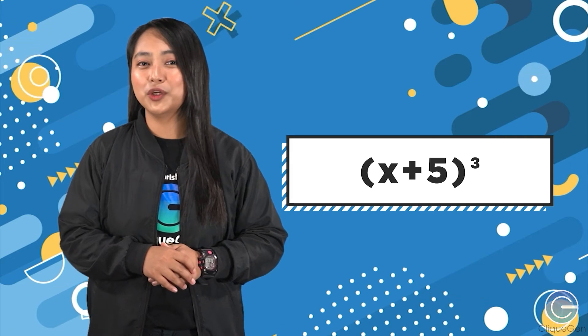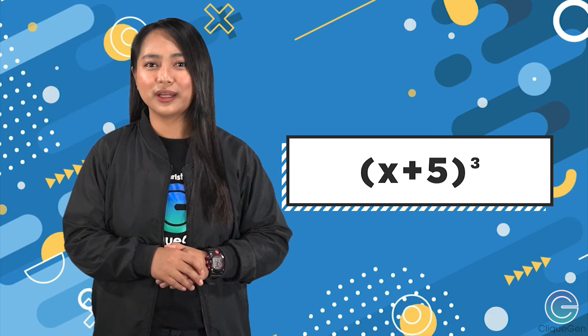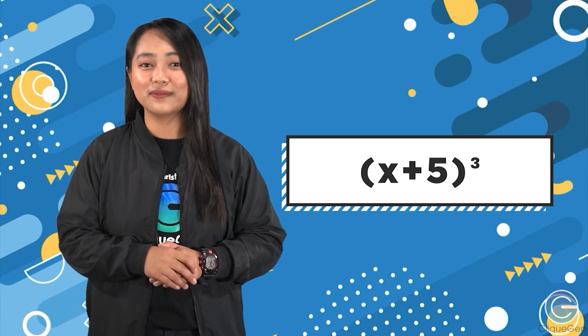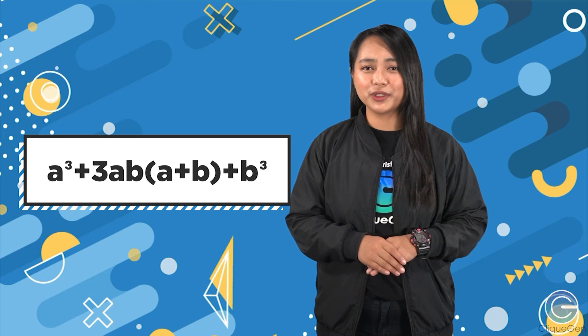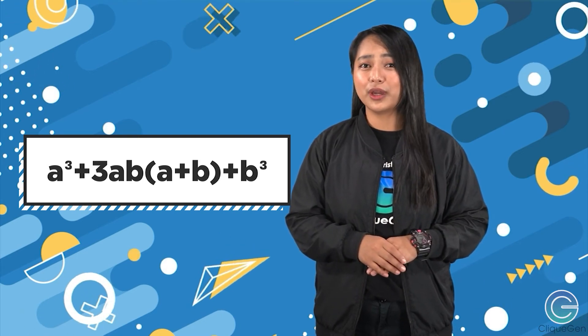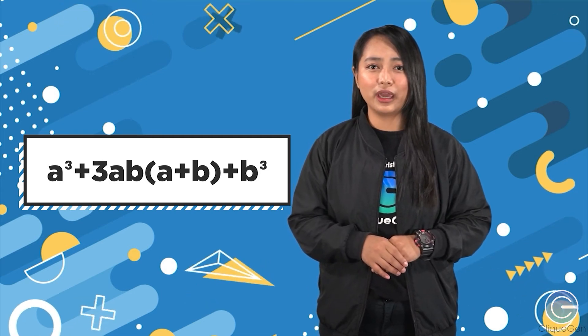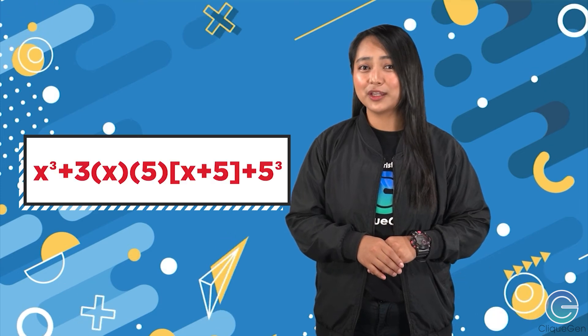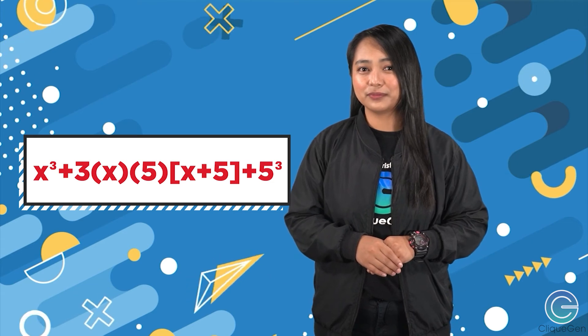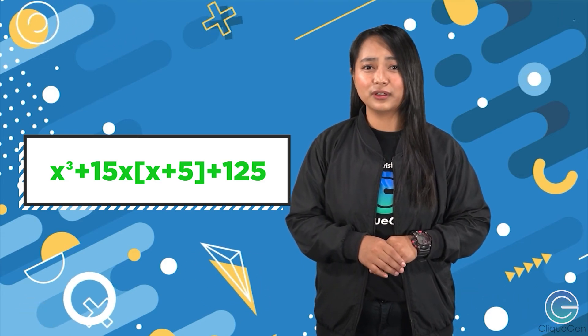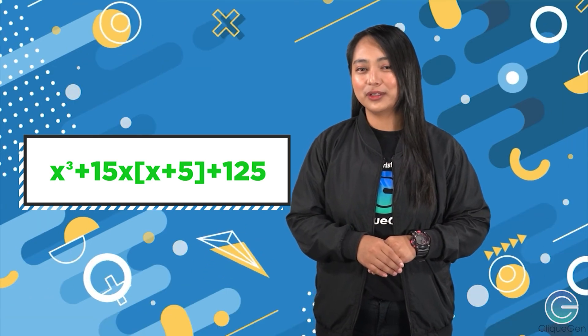For our examples we will use the same example as before: the cube of x plus 5. Our first step is to identify the a term and b term — in this case a is x and b is 5. Our second step is to substitute into the formula: a cubed plus 3ab times the quantity a plus b plus b cubed becomes x cubed plus 3 times x times 5 times the quantity x plus 5 plus 5 cubed, which equals x cubed plus 15x times the quantity x plus 5 plus 125.